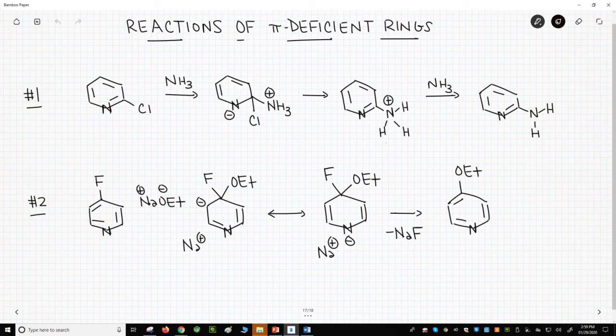The top reaction shows the reaction of ammonia with 2-chloropyridine. The reaction starts with addition by the nitrogen onto the carbon bearing the chlorine atom.